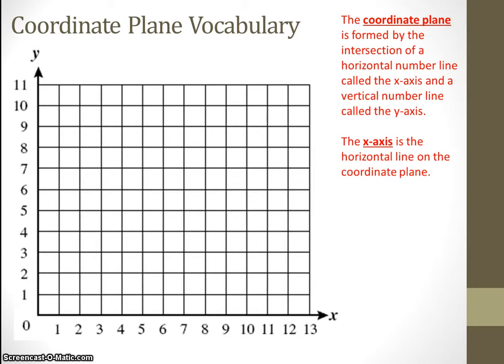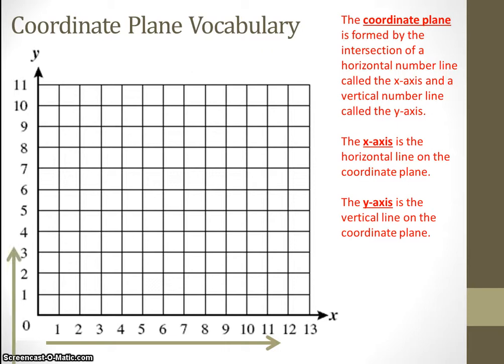As mentioned in the previous definition, the x-axis is the horizontal line on the coordinate plane. Horizontal means that it is going from side to side. The y-axis is the vertical line on the coordinate plane. This axis goes up and down, or vertically.